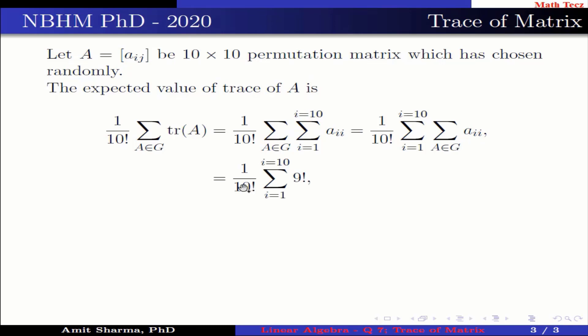This is further written as 1 over 10 factorial summation i varies from 1 to 10 of 9 factorial. Why is it so? Because the value of a_ii is 1 when i approaches to i. This equals 10 times 9 factorial divided by 10 factorial, which is 1.